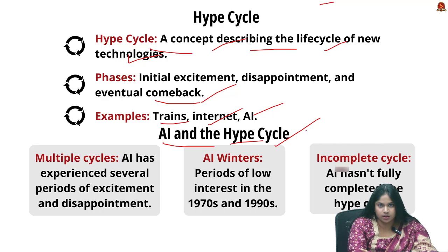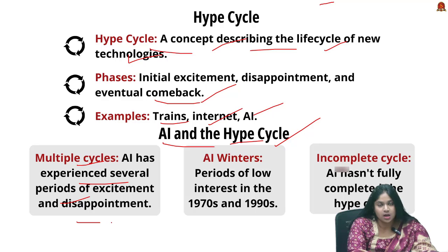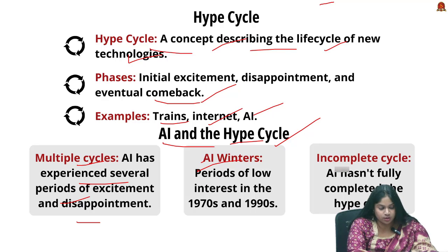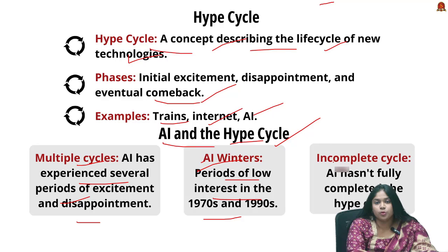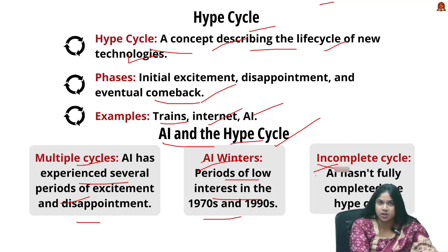AI has gone through several periods of excitement and disappointment over the decades but hasn't fully completed the hype cycle. In the 1960s there was excitement over early AI like chatbots, but this was followed by 'AI winters' — periods of low interest — in the 1970s and 1990s.